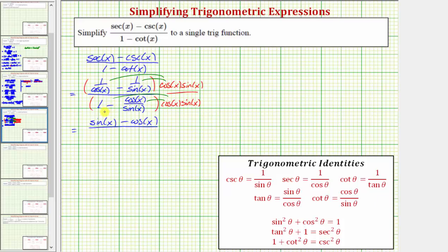On the bottom, we have one times cosine x times sine x, which is cosine x times sine x. Then we subtract cosine x times sine x times cosine x over sine x, which simplifies to cosine squared x, because sine x over sine x simplifies to one.